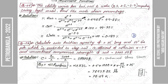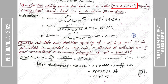The utility varies for bus, car and walk: 2.3, 2.1 and 3.4 respectively. The utility values are given. Using the logit model, find the mode share percentage. We use the logit model to calculate the mode share percentage for each mode.